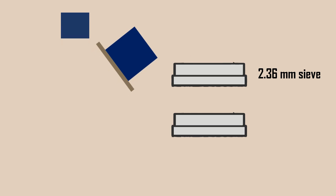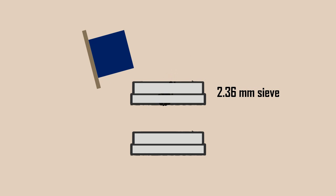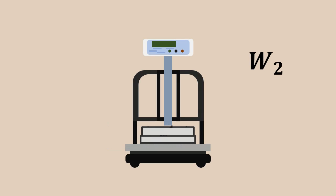Later, the entire setup is removed and sieved on a 2.36 mm sieve. The fraction passing through the sieve is weighed, considered as W2.